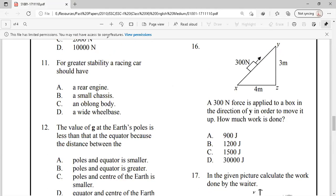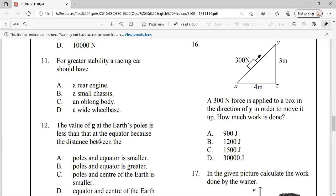Let's move to our next question, we have question number 16 and 12. The value of g on the earth pole is less than that of equator. Because the distance of pole from the center of earth is smaller and the equator from the center of earth is greater.